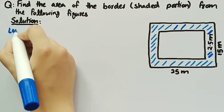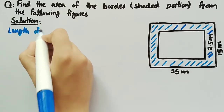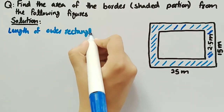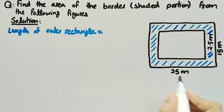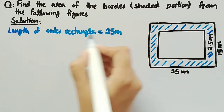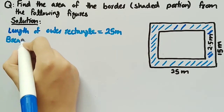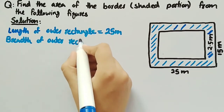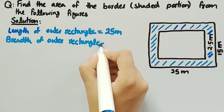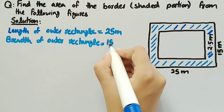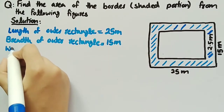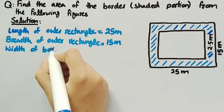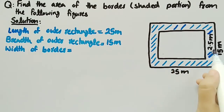The length of the outer rectangle is equal to 25 meters, breadth of the outer rectangle is equal to 15 meters, and the width of the border or shaded region is equal to 2.5 meters.